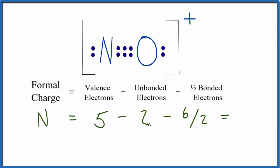So when we add them up, five minus two, that gives us three, and then three minus six over two is three minus three, so zero. So the formal charge on the nitrogen is zero, and we'll write it like that.